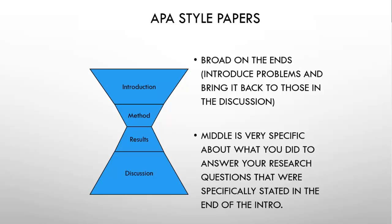If your APA manuscript had a shape, that shape would be an hourglass — so that's what you see here. You start with the introduction, go to the method, the results, and then the discussion, and all of that should be in the shape of an hourglass. I don't literally want you to do weird formatting so your paper takes the shape of an hourglass — it's kind of a metaphorical thing. It's very broad at the beginning and the end of the paper. You start the introduction at a broad level and you end the discussion at a broad level.